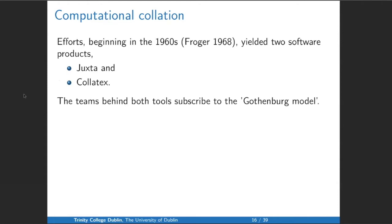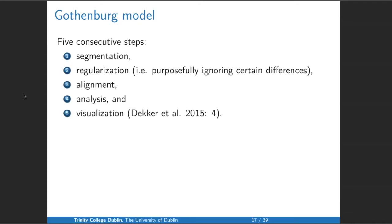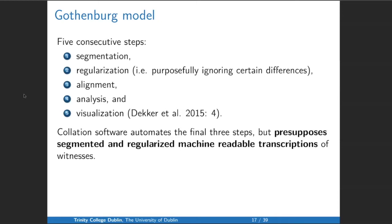There have been some efforts to computationally model manuscript collation beginning in the 1960s. These have coalesced into two software products called Juxta and Collatex. The teams behind both tools subscribe to the Gothenburg model — named after a meeting in Gothenburg. Collation can be thought of as five consecutive steps: segmentation, regularization (the purposeful ignoring of certain differences), alignment, analysis, and visualization. Collation software automates the final three steps, but presupposes segmented and regularized machine-readable transcriptions of witnesses beforehand.